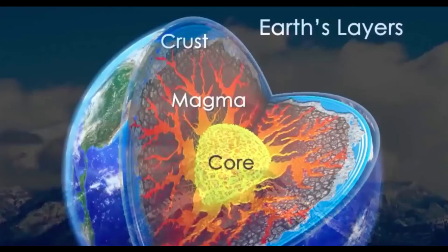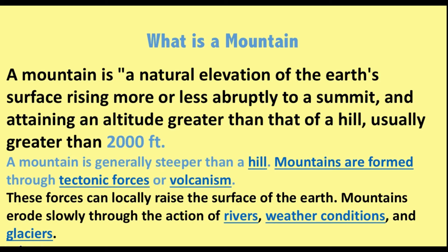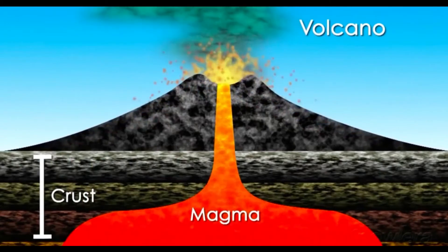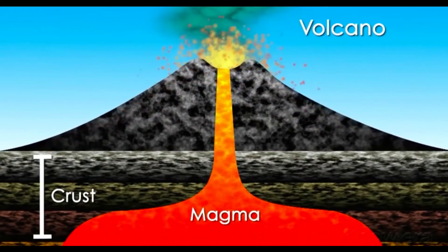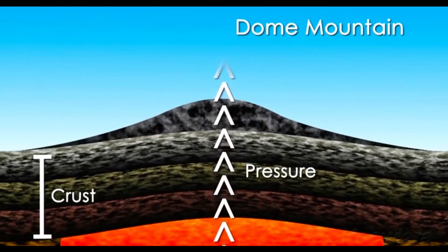For example, we have what we call volcanic mountains, where we see magma rising from the interior of the earth's crust to the surface, where different layers of lava solidify. This is where we see successive layers being solidified and then forming a mountain.